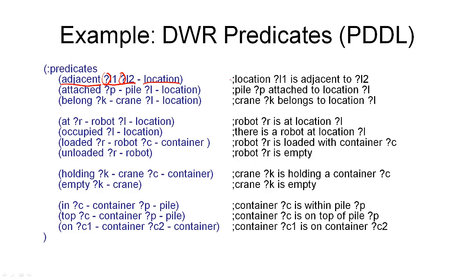And again, there's a comment here that explains this more readably. Location L1 is adjacent to L2. Then we have a relation attached, which defines where a pile P is, namely at some location L. And the relation belong, which defines where the crane is, also at some other location.